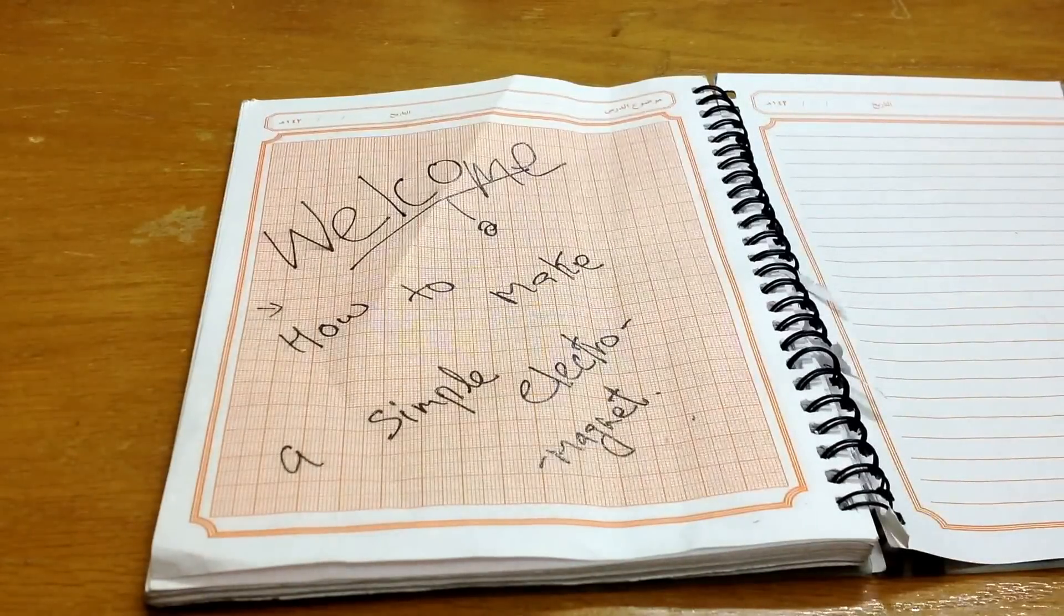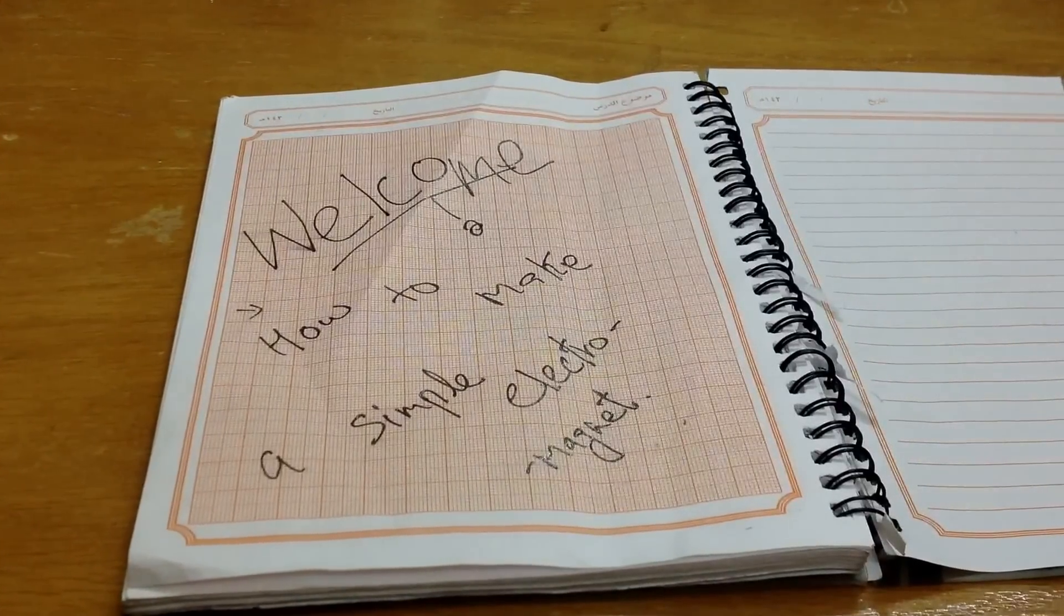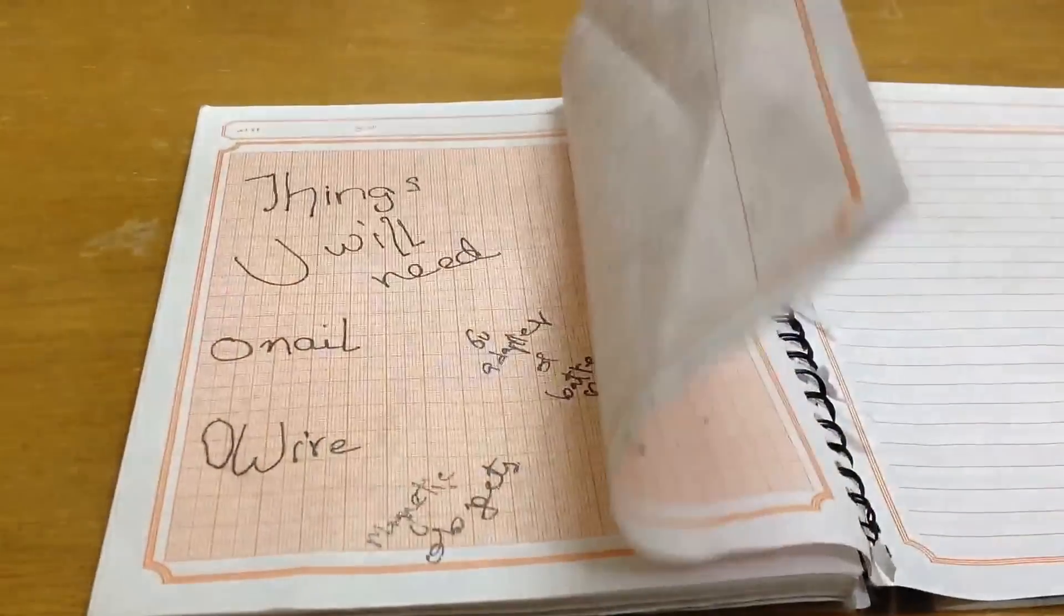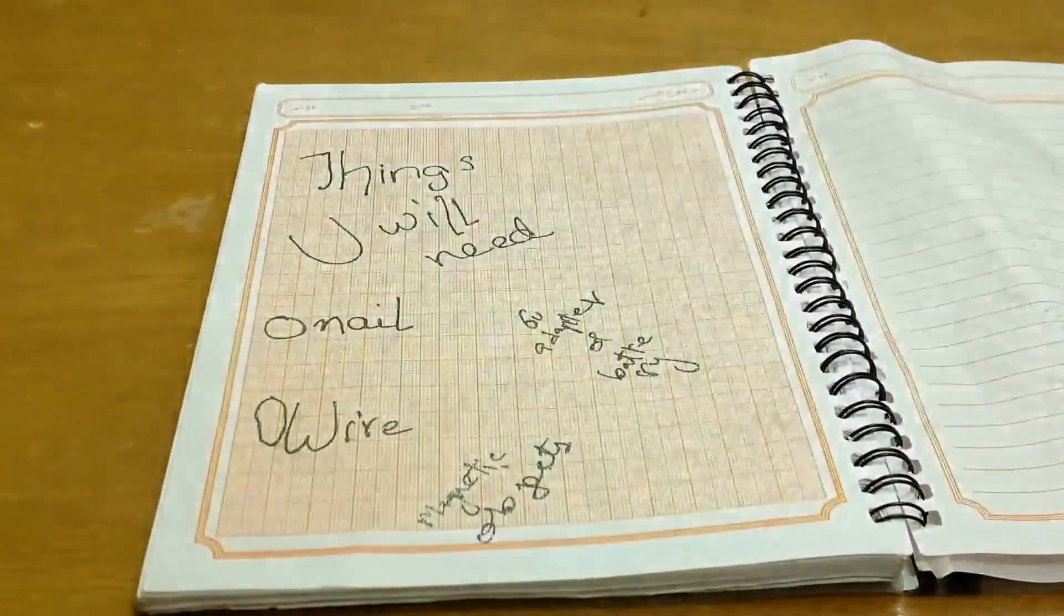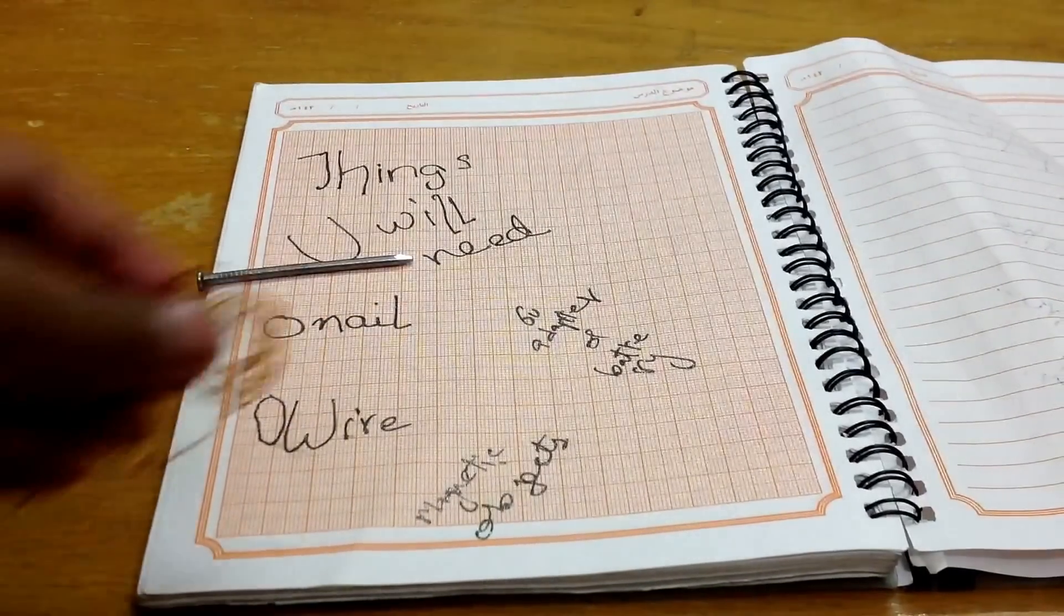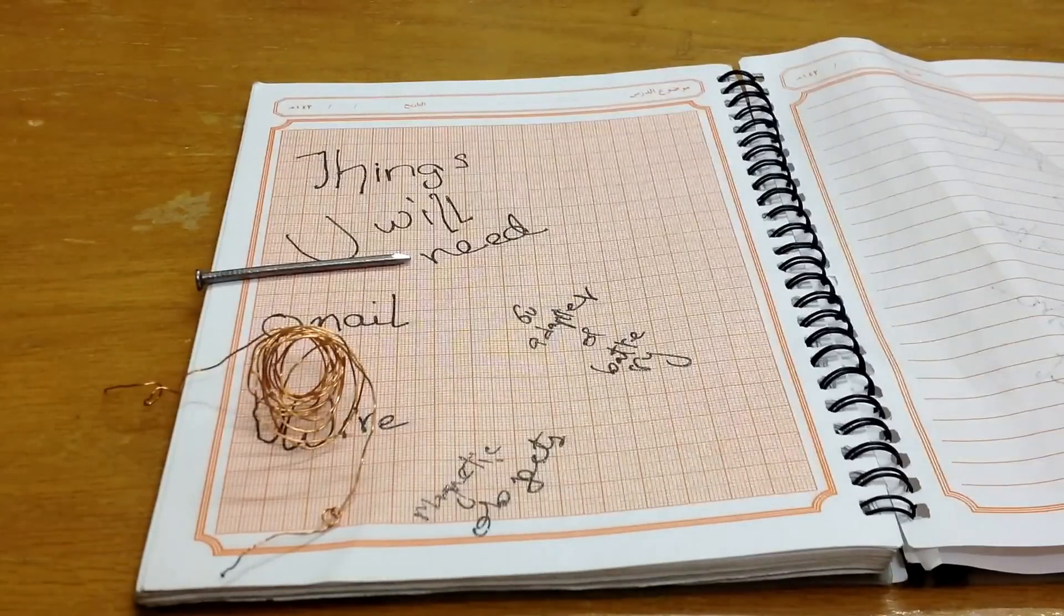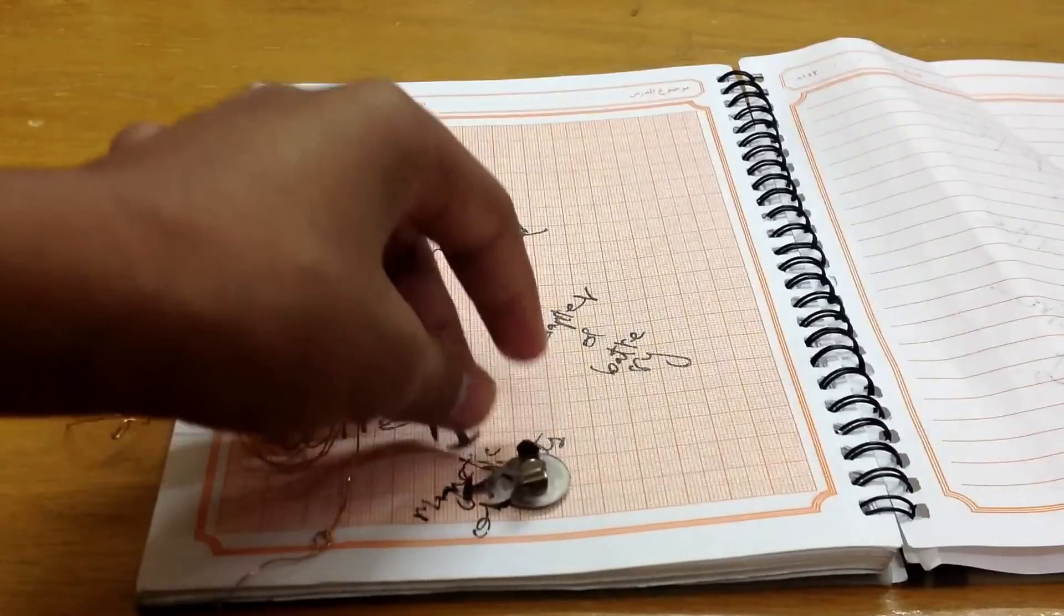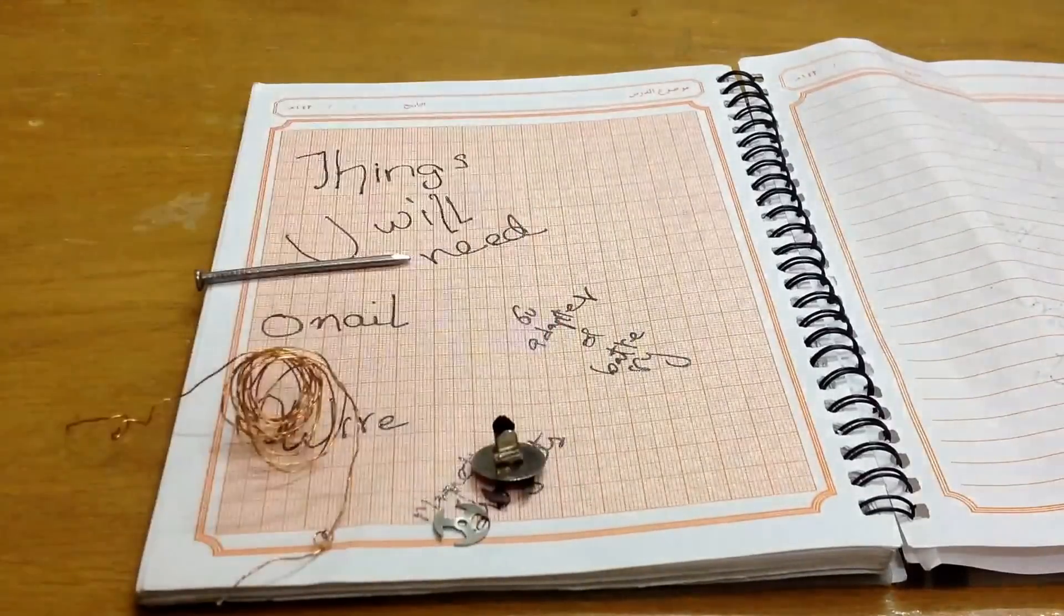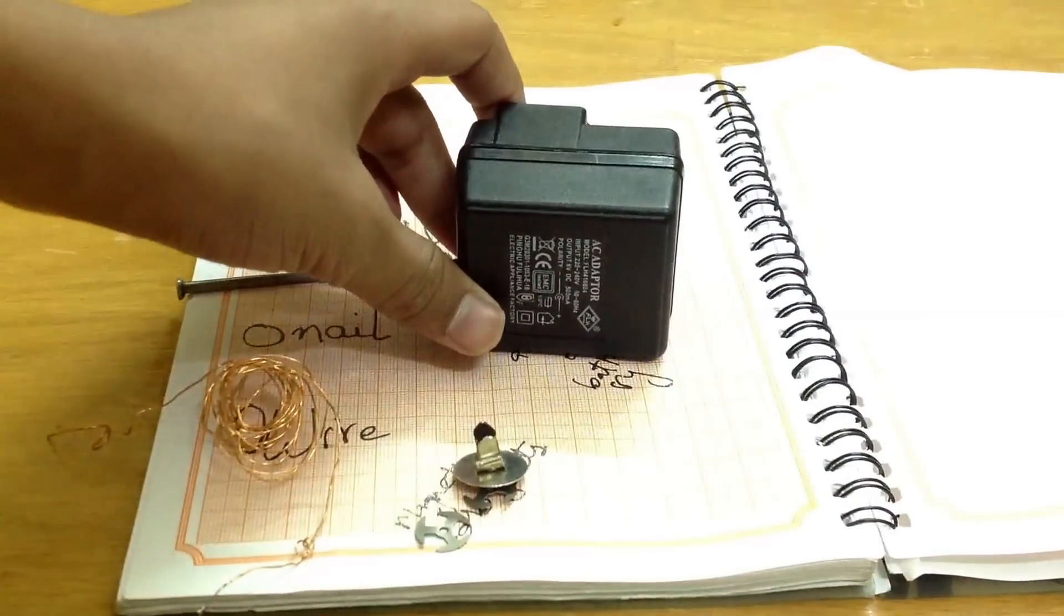Welcome. In this video, we are going to show you how to make a simple electromagnet. For that, you will need a nail, a wire, prefer copper wire, some magnetic objects which attract to magnets, and a 6-volt adapter.